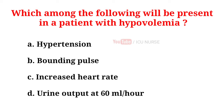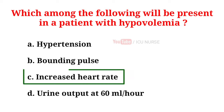Which among the following will be present in a patient with hypovolemia? A. Hypertension, B. Bounding pulse, C. Increased heart rate, D. Urine output at the rate of 60 ml per hour. And the correct answer is C. Increased heart rate.